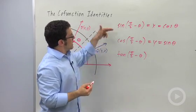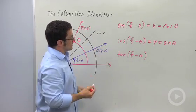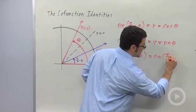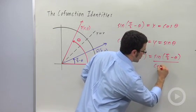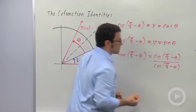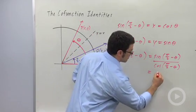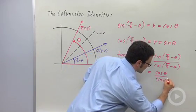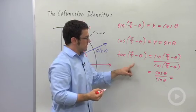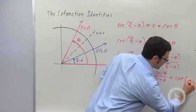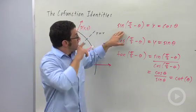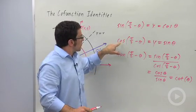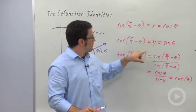Once you have the two co-function identities for sine and cosine, you can find the one for tangent. Tangent of pi over 2 minus theta is sine of pi over 2 minus theta over cosine of pi over 2 minus theta, and that makes the tangent of pi over 2 minus theta equal to cotangent theta. One way to convert from any trig function to its co-function is to take the function of pi over 2 minus theta.